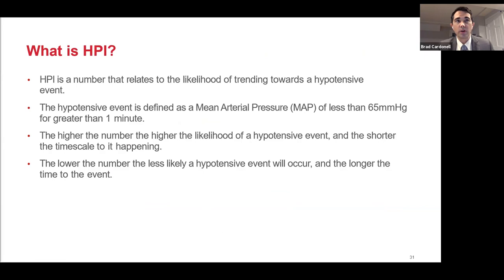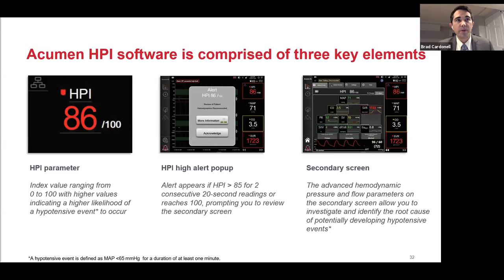HPI is a number that relates to the likelihood of trending towards a hypotensive event, defined as MAP less than 65 for greater than one minute. The higher the number, the more likely the hypotensive event and the shorter the time until it occurs — and conversely, the lower the number, the less likely or the longer until an event. Acumen HPI software has three key elements: the HPI number (a value from 1 to 100), the HPI pop-up alert (which appears after two consecutive readings above 85), and the secondary screen which provides further details about the potential causes and treatments of the hypotensive event — allowing us to get at the root cause rather than just temporizing with vasopressors or unnecessary fluid.